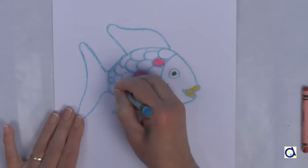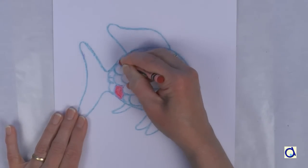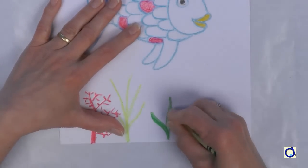You can also talk about marine life, plants and other organisms in the fish's environment. So you can draw algae and corals of different colours.